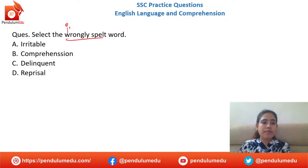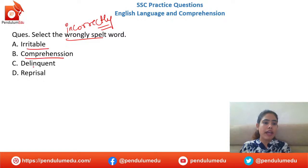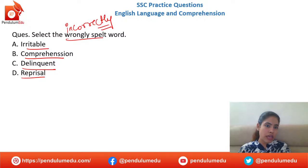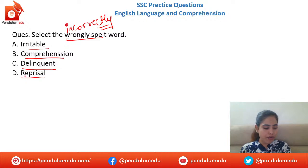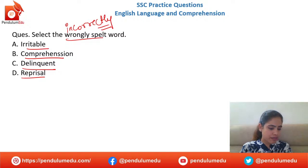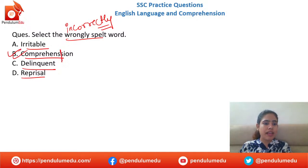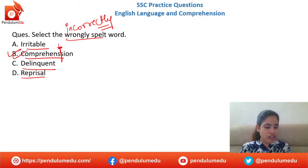Incorrectly spelled word: irritable, comprehension, delinquent, reprisal. The answer is option A — 'irritable' requires a single S, not double S. Everyone is right — option A is the incorrectly spelled word. Let's go ahead.